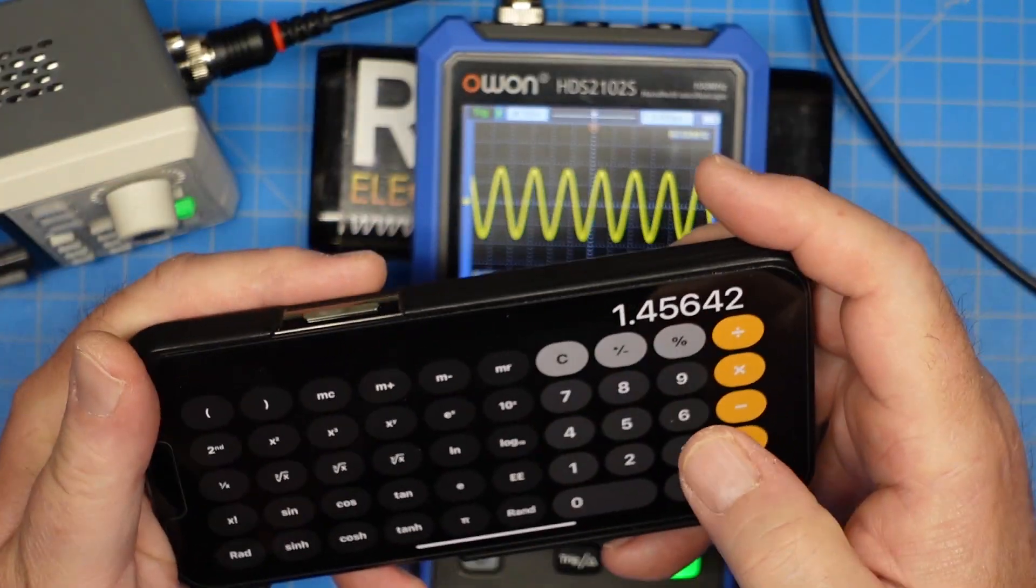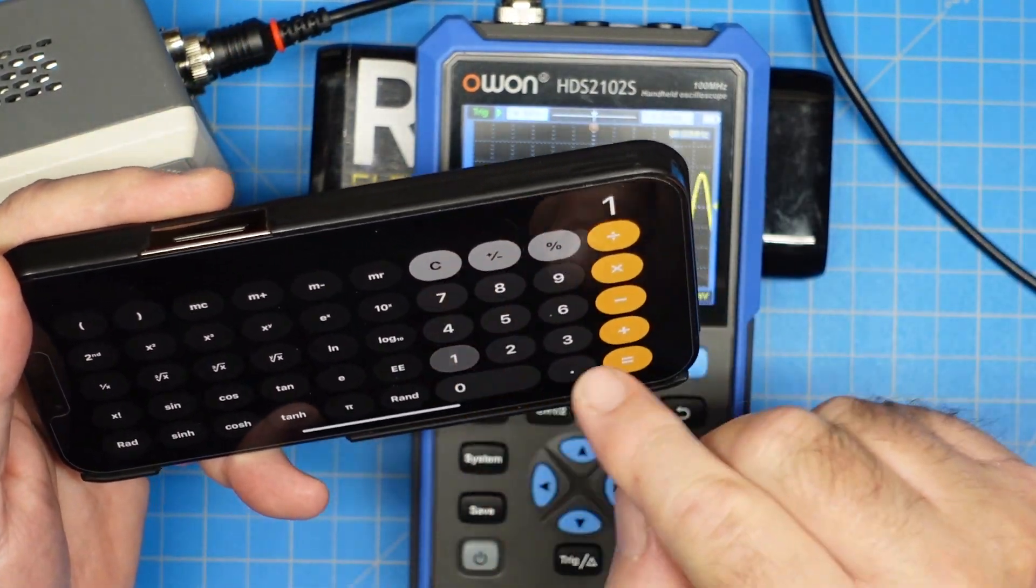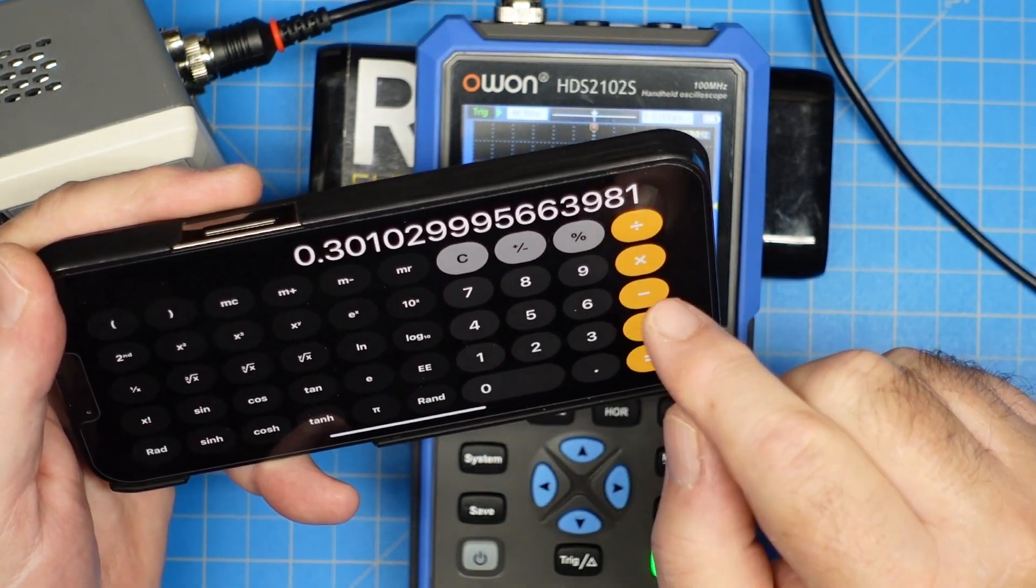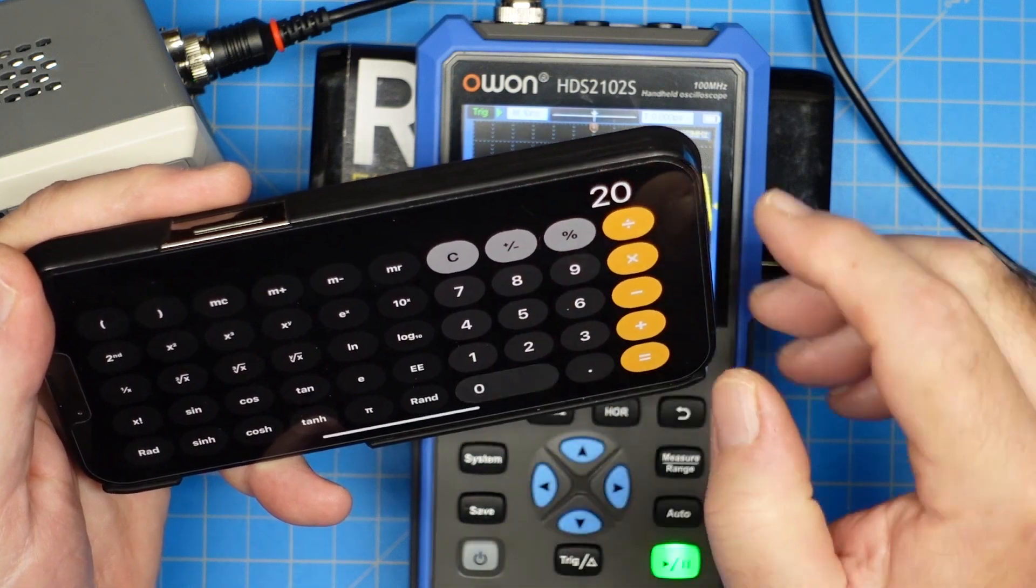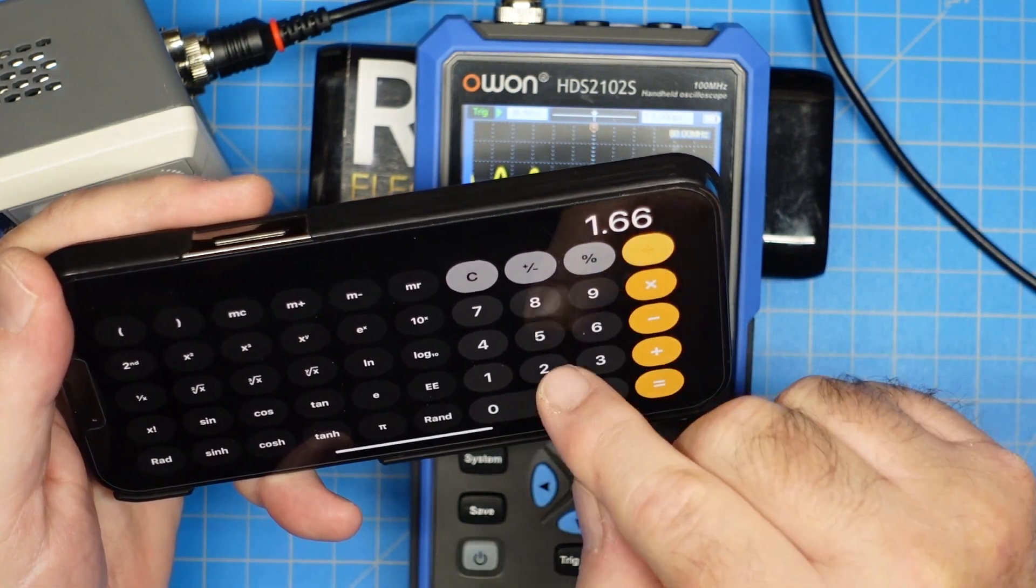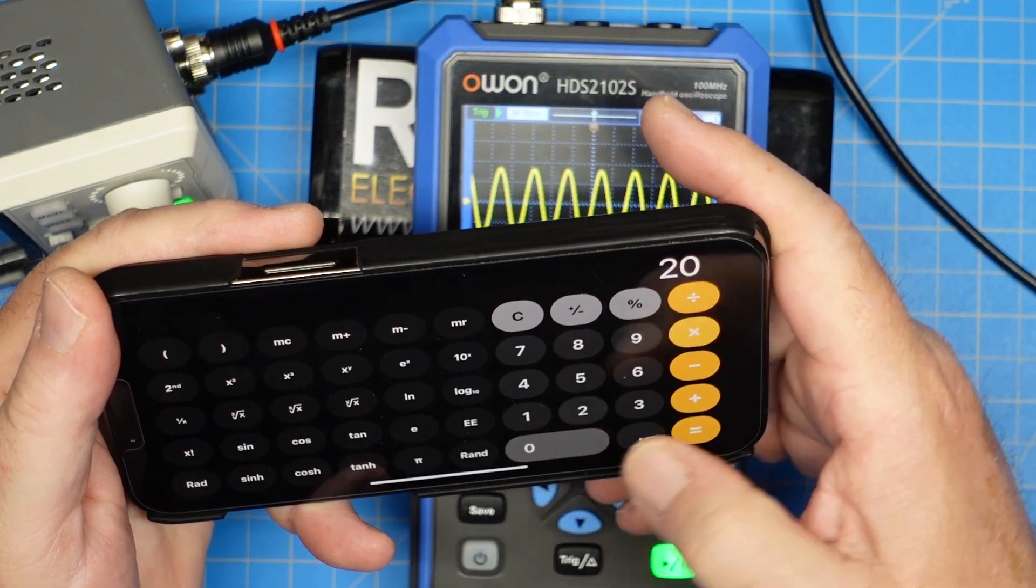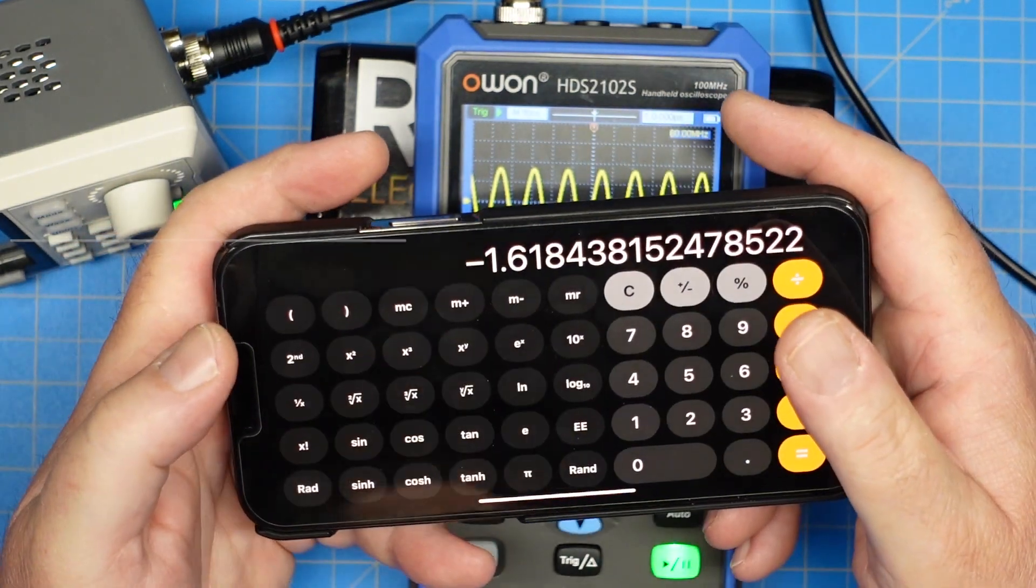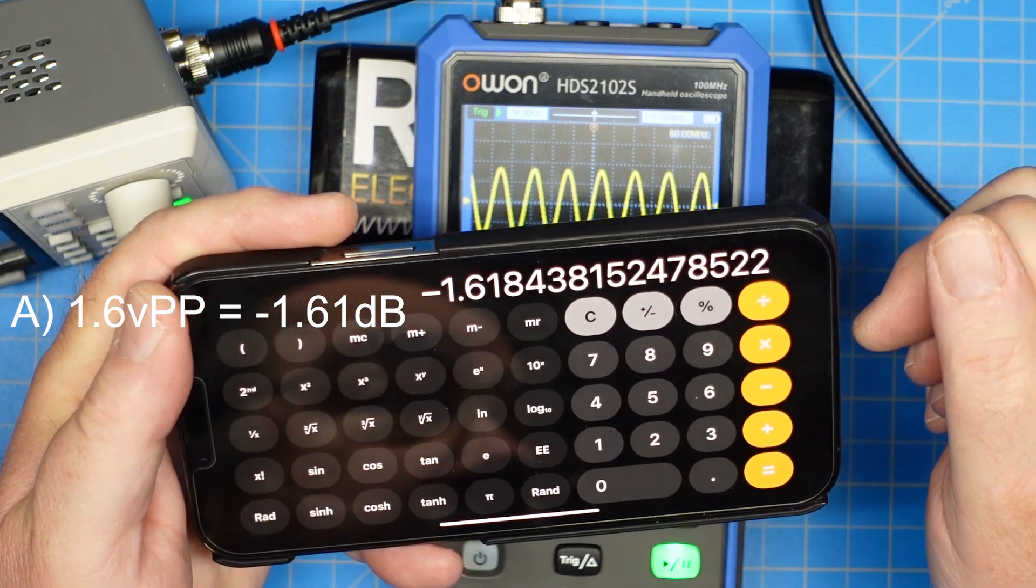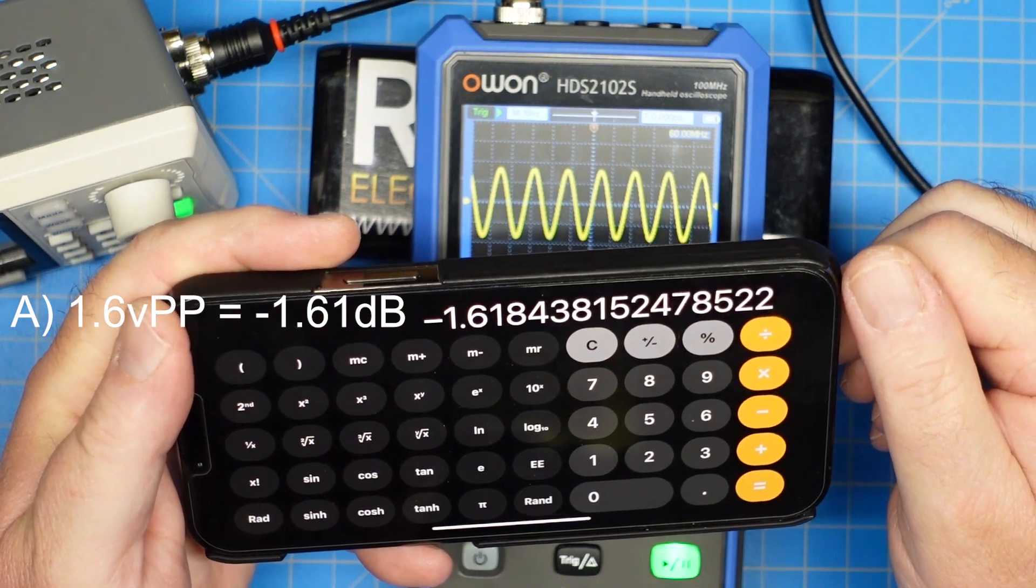So if we do some math and I know y'all love to do math, we're going to take 1.66 divided by 2 log 10 times 20 equals, we are down 1.6 dB at 60 megahertz. So that's where we are.